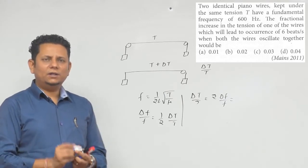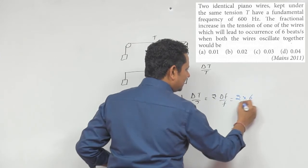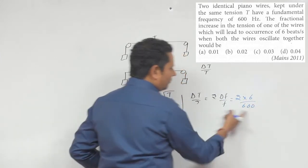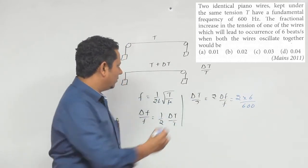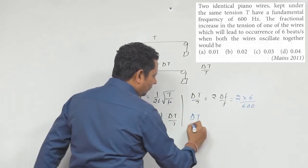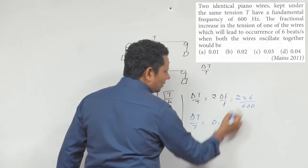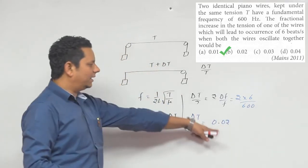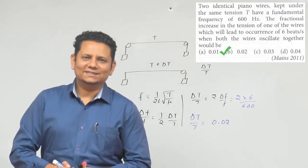This equals 0.02. It will be 2 by 100, so 0.02. Option B would be the right answer for this problem.